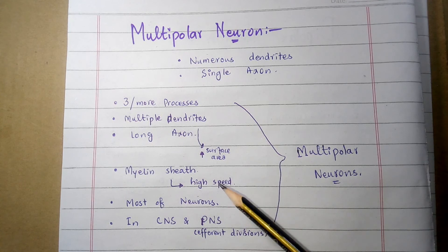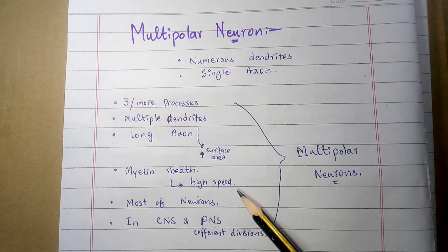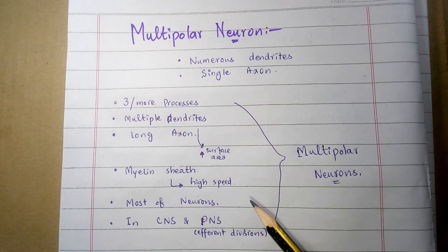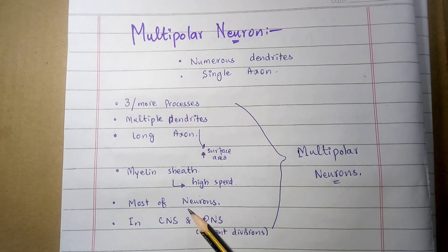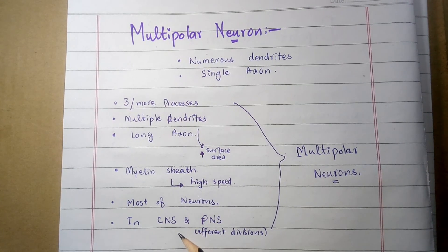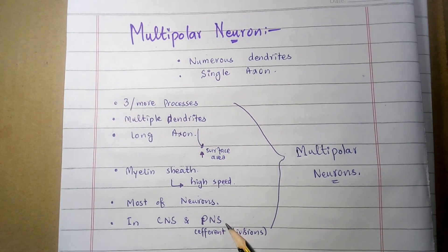The myelin sheath is not continuous throughout the length of the axon. There are gaps in the myelin sheath between the Schwann cells, known as the nodes of Ranvier. Impulses only occur at these gaps, which accelerates impulse conduction. More than 99% of the neurons in the human body are of the multipolar type. They are found in the CNS and the efferent division of the peripheral nervous system.